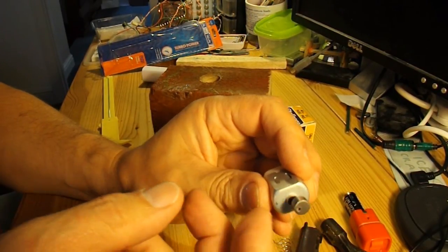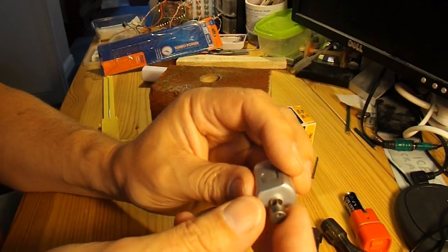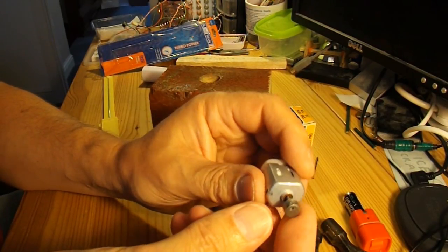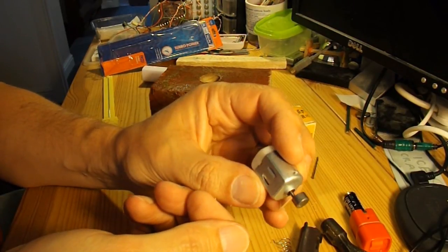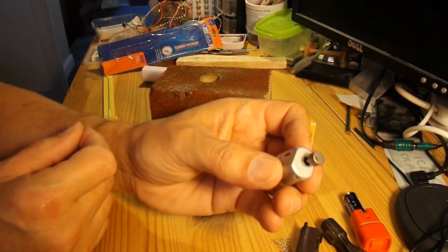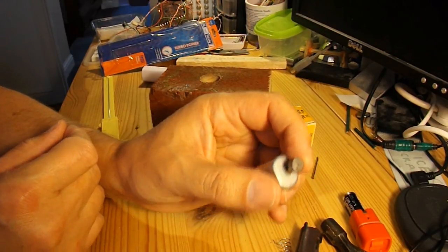I think it's pressed onto the shaft there, so it doesn't come off easily. You might be lucky, you might be able to pull it off with a pair of pliers, but at the same time you might damage the motor doing that. So I thought I'd show you how I do it.